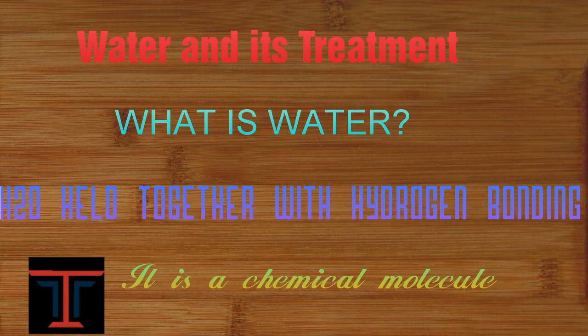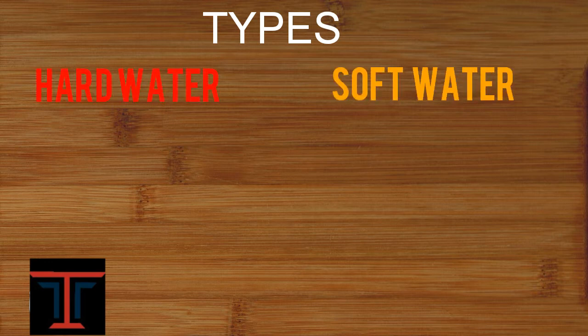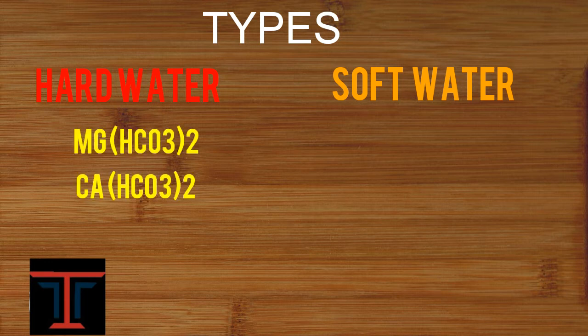Now let's talk about types of water. Water has two types: soft water and hard water. The reason for hardness is bicarbonates of magnesium and calcium, which are responsible for temporary hardness.